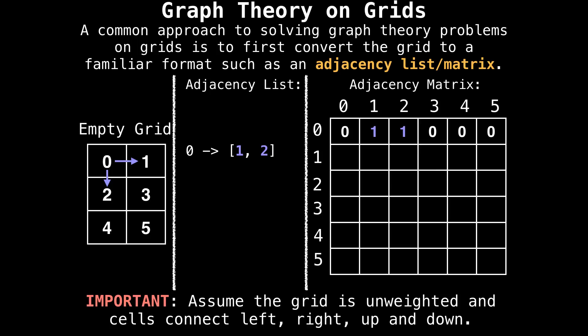Assuming edges are unweighted and cells connect left, right, up, and down, node zero connects with node one and node two, which we reflect in the adjacency list and adjacency matrix on the right. Then node one connects to node zero and node three, node two to nodes zero, three, and four.